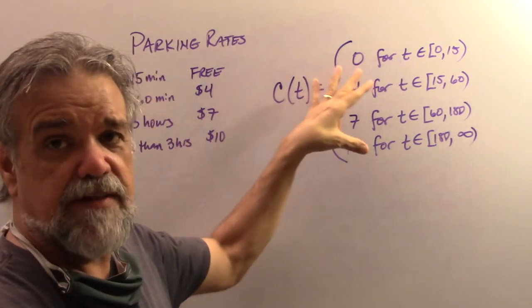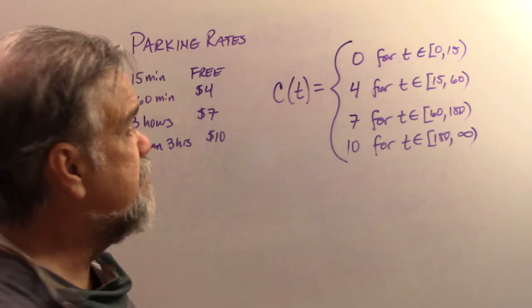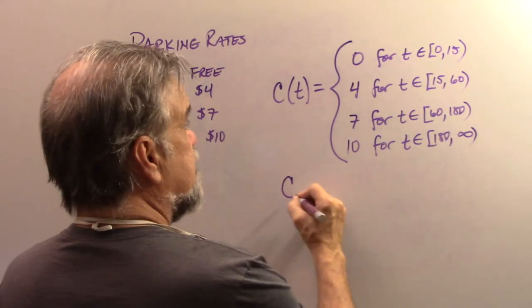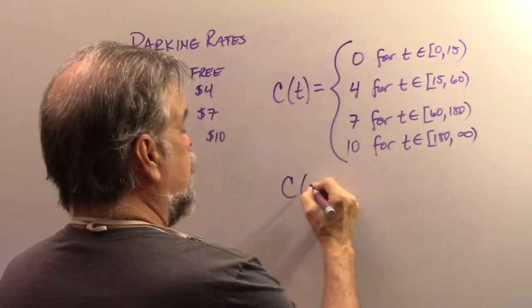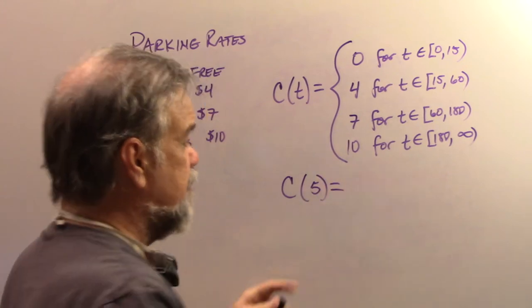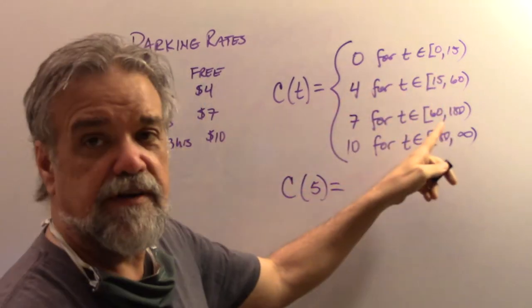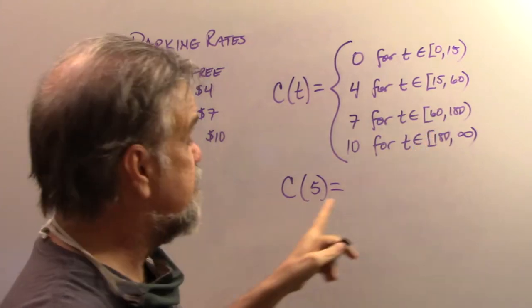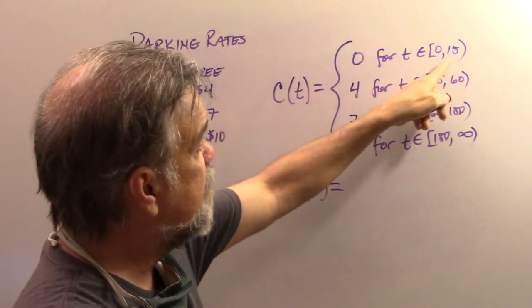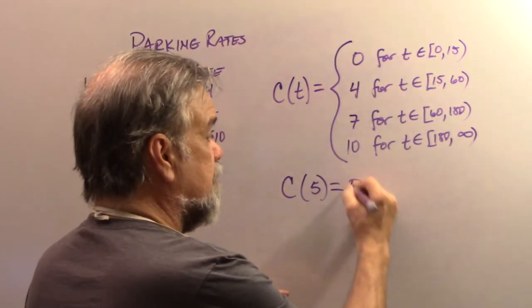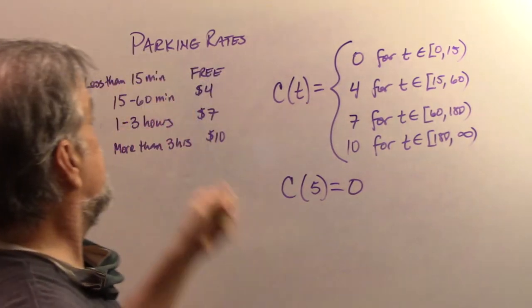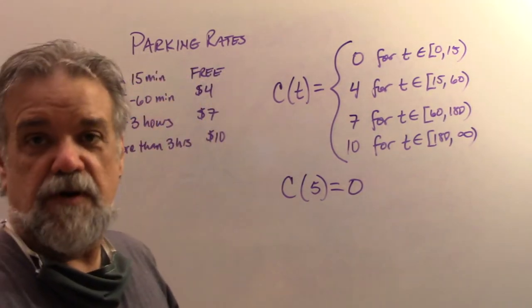This and this mean exactly the same thing. This is how we write it mathematically. So this means if I wanted to know what is C of five, well, the first thing I would do is I would look over here on the right and I'd say, which interval does this five fall into? Oh, it's here. That means it's going to be zero. What does that mean? It means it's free to park for five minutes.